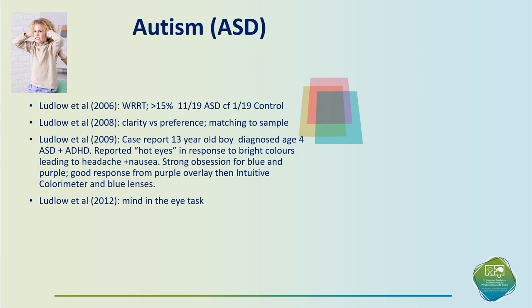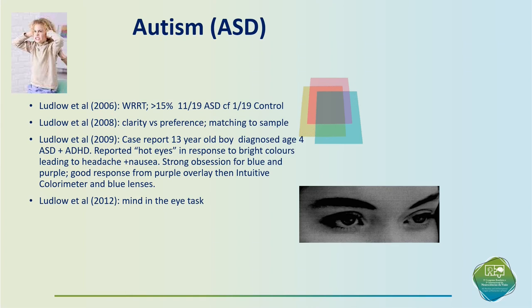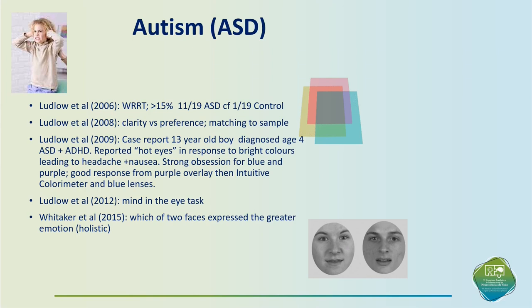Amanda Ludlow then looked at the 'Mind in the Eyes' task of Baron-Cohen and showed that the appropriately coloured overlay improved performance on that task — the person has to register the most appropriate emotion being expressed by the eyes. My colleague Lydia Whittaker did a study with a two-alternative forced choice between two faces, where the person had to determine which face expressed the stronger emotion. That is a holistic task, and the children with autism performed better when the screen was tinted the same colour they had chosen earlier for reading.